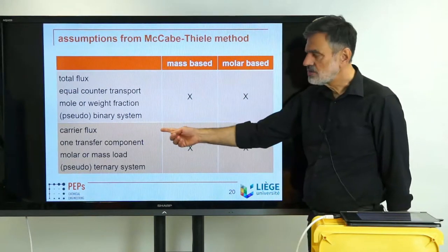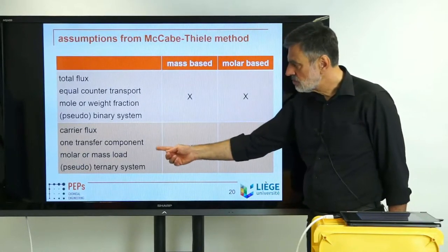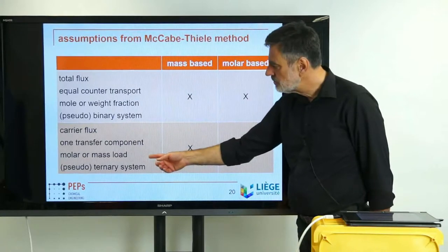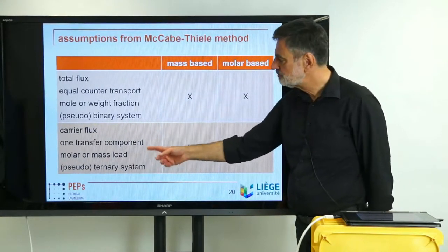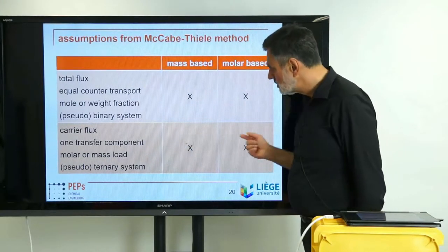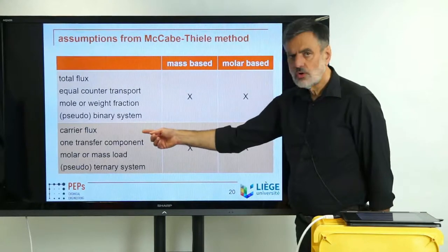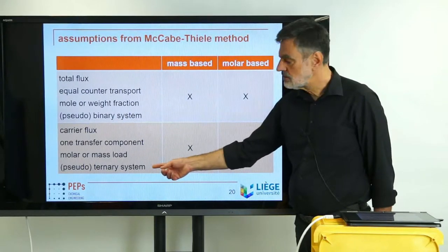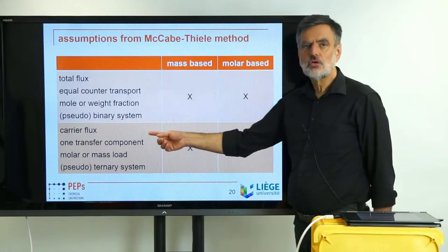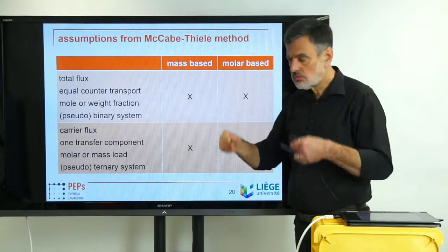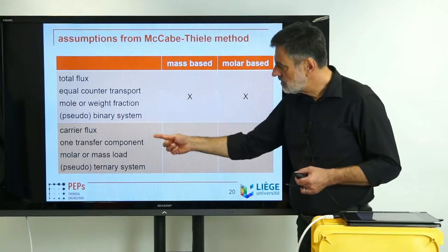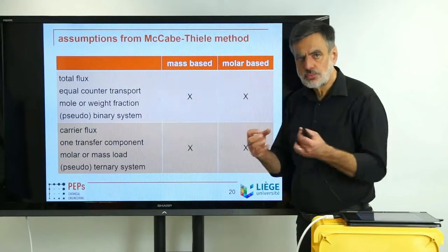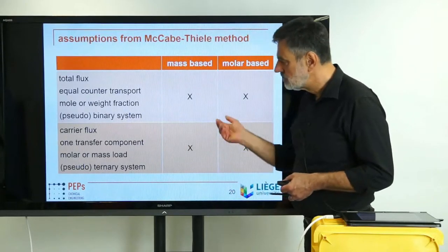The other option is to use the carrier flux only, with one transfer component. You then use what are called Bancroft coordinates, or loads — molar or mass ratios. I will call it 'load' throughout the lecture. The mass load times the overall flux gives the flux of the individual component. This approach requires consideration of a ternary system: two carriers from the two phases plus the transfer component. If there are more components, they must be grouped into pseudo-components, giving a pseudo-ternary system.